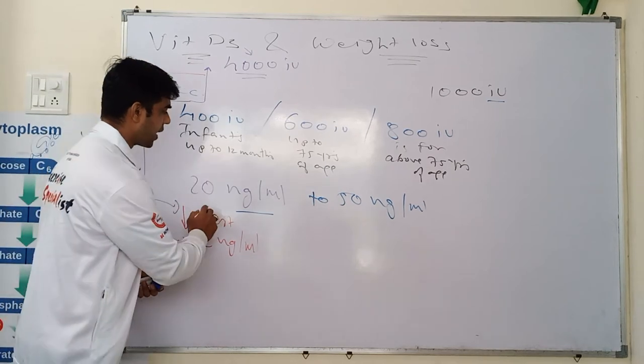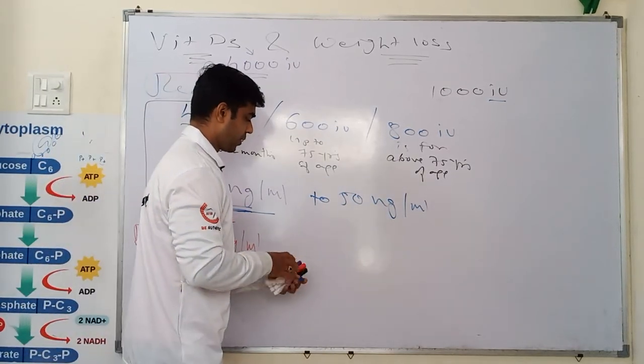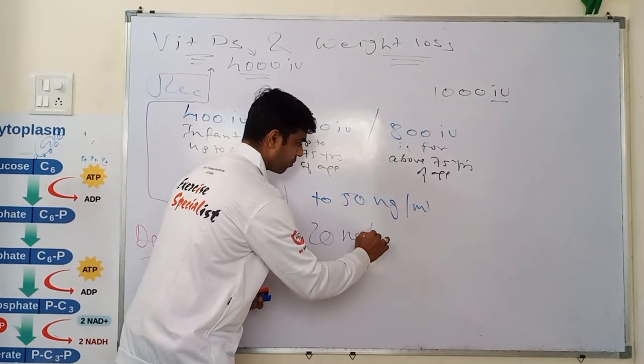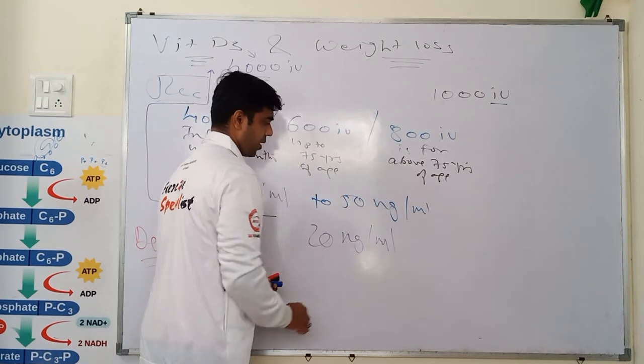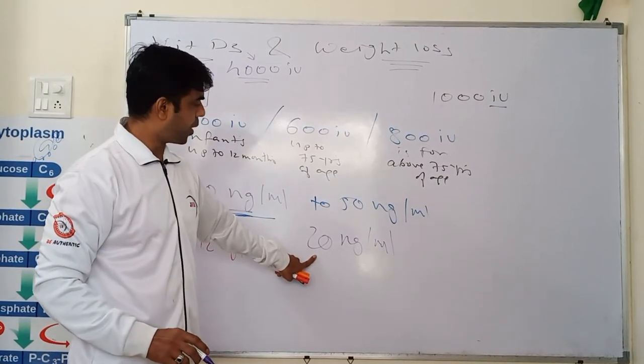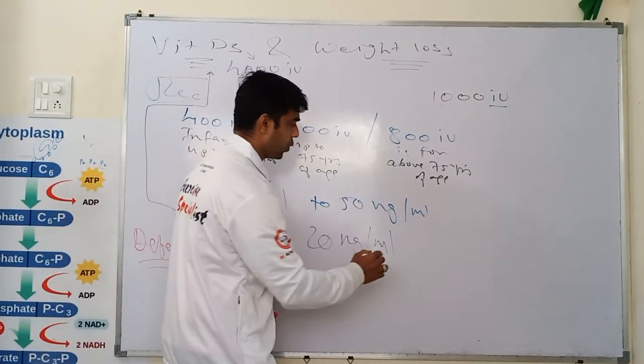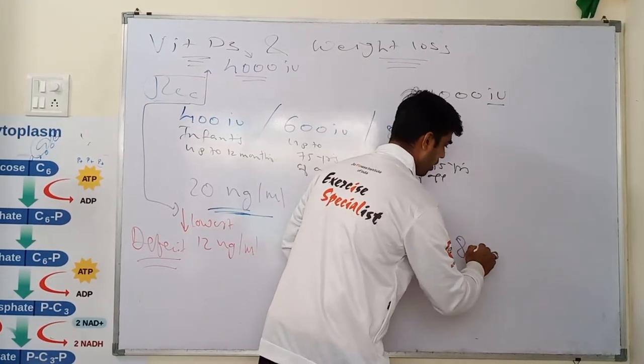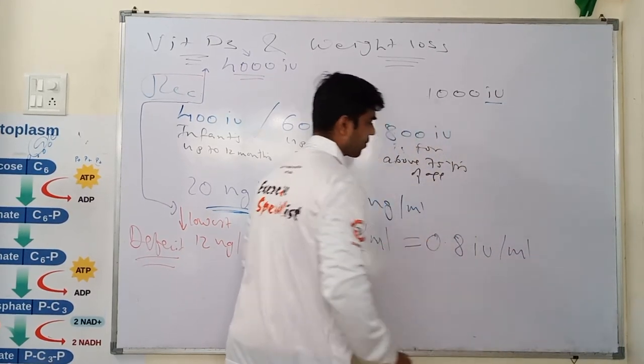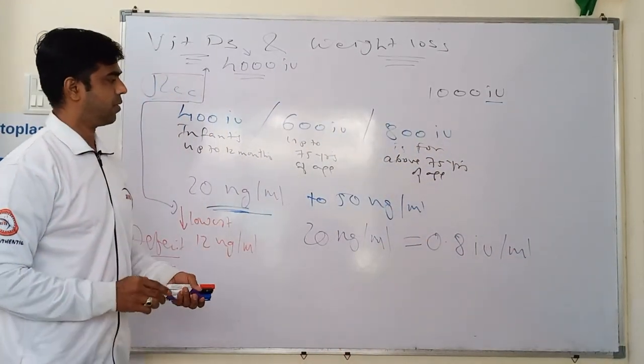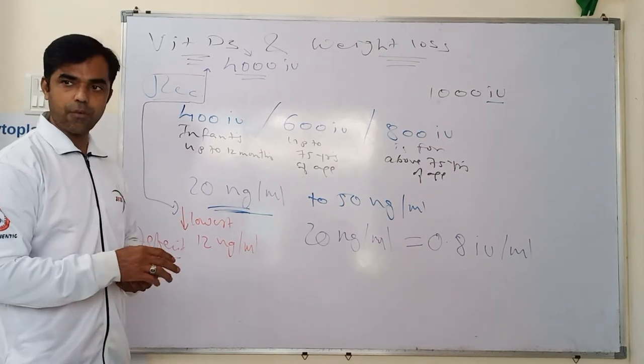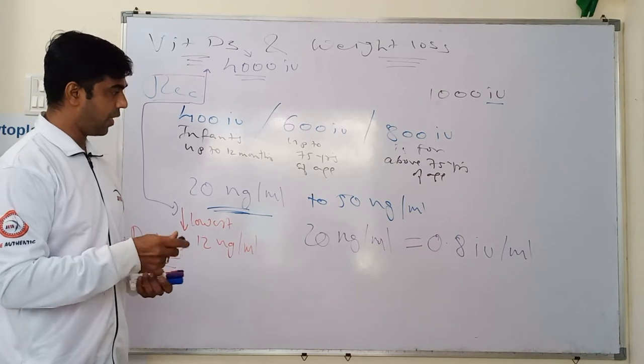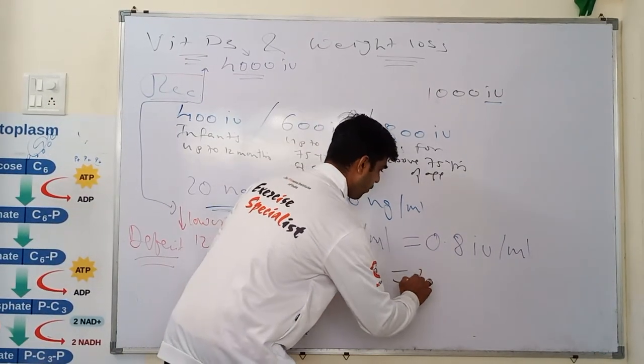Let's take healthy range which is 20 nanogram per ml. This 20 nanogram per ml is equal to 0.8 IU per ml. And if you convert now, if you do the maths, it will be somewhere like 4000 international unit.